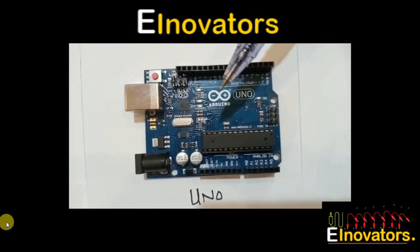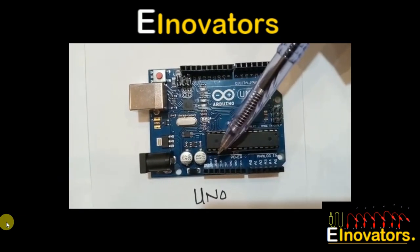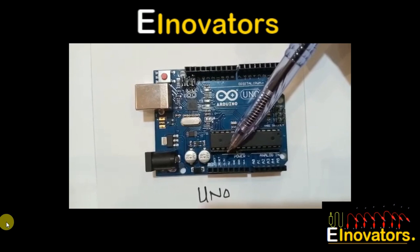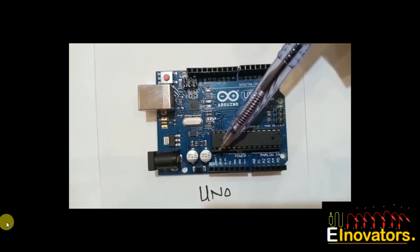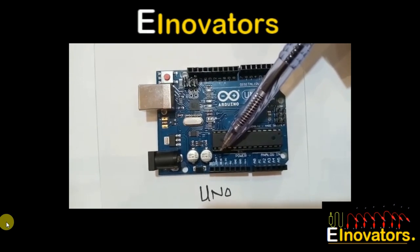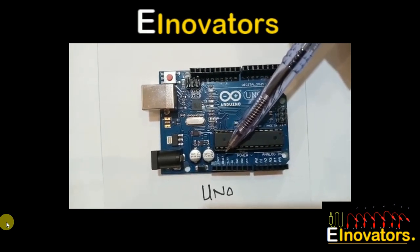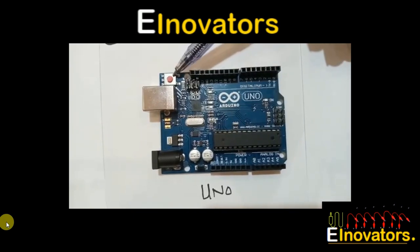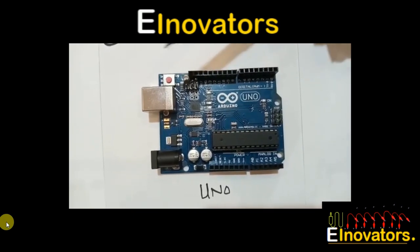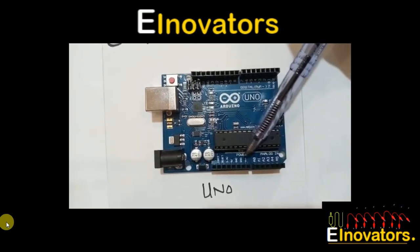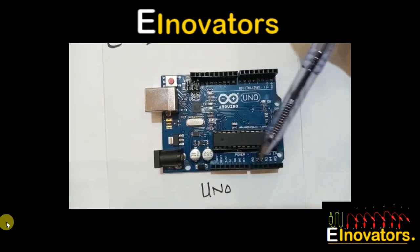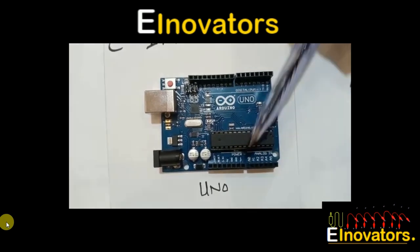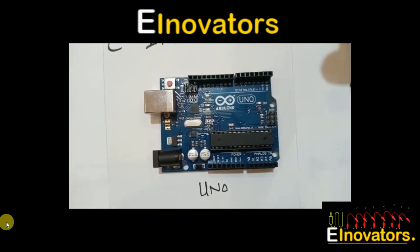There is a 5 volt and 3.3 volt pin used to power up the sensors. After that there is a reset pin, which is used to reboot the system or reset the program, and there is also one button which is used to reset as well. After that there is a ground pin to provide the ground to the sensor. Furthermore, there is VIN, which is also used to power up the Arduino.